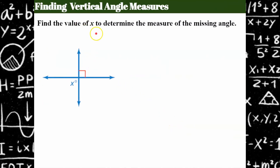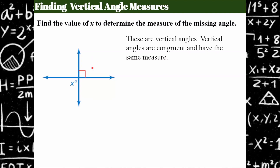Now we're going to use what we've learned about vertical angle measures to find the missing angle. The missing angle x is opposite this angle, and vertical angles have the same measure. So if this angle is 90 degrees, then angle x must also be 90 degrees.